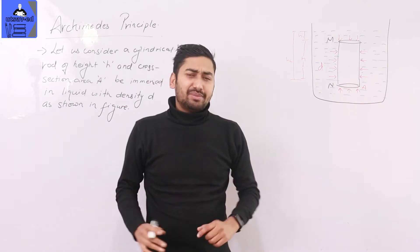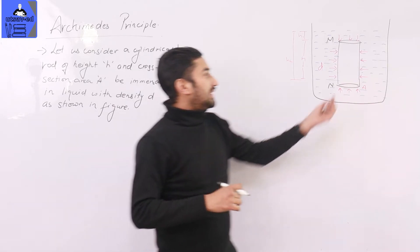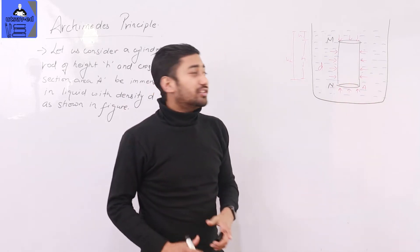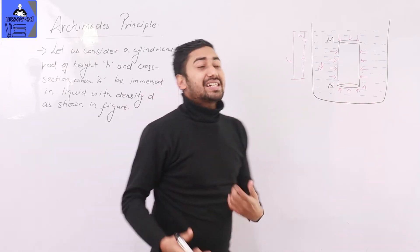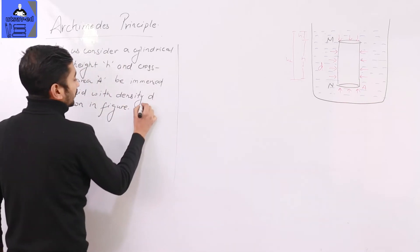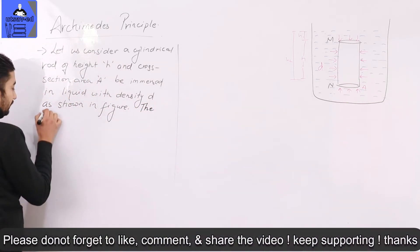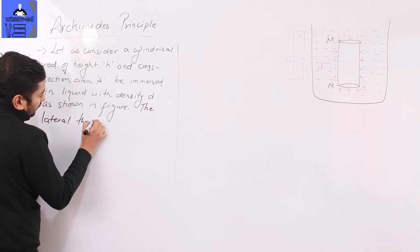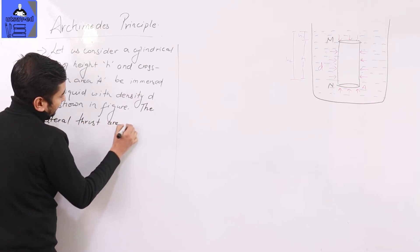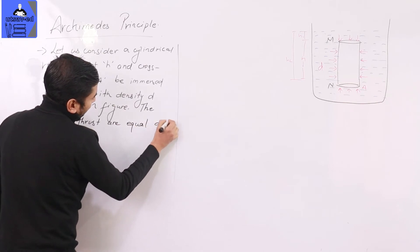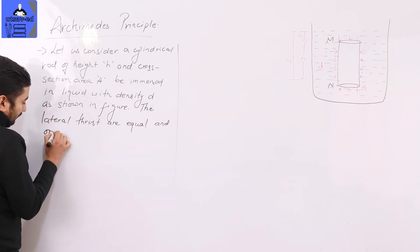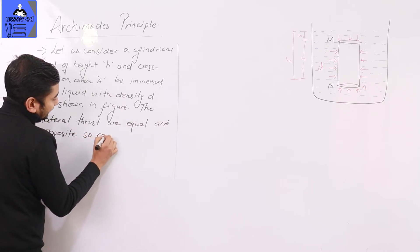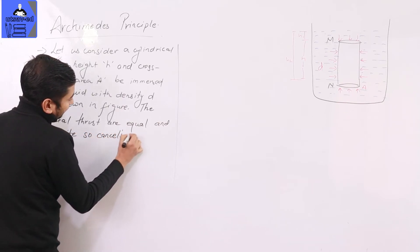The lateral forces experienced on the sides are equal and opposite, so they cancel each other out. That means the lateral thrust forces are equal and opposite and cancel each other.